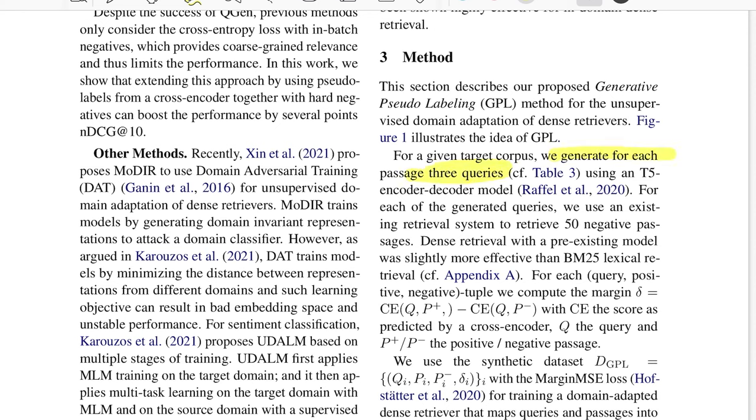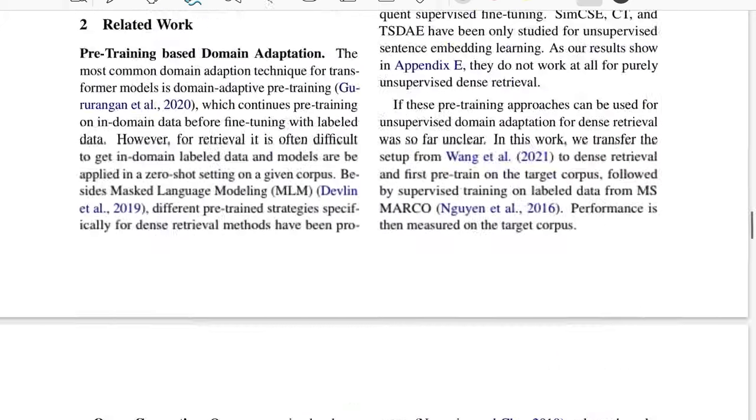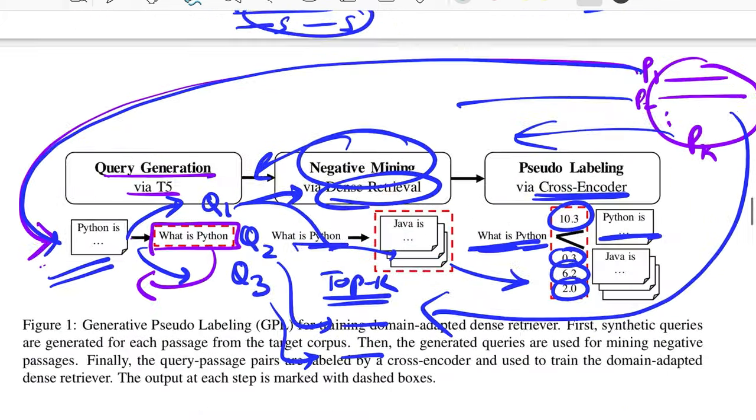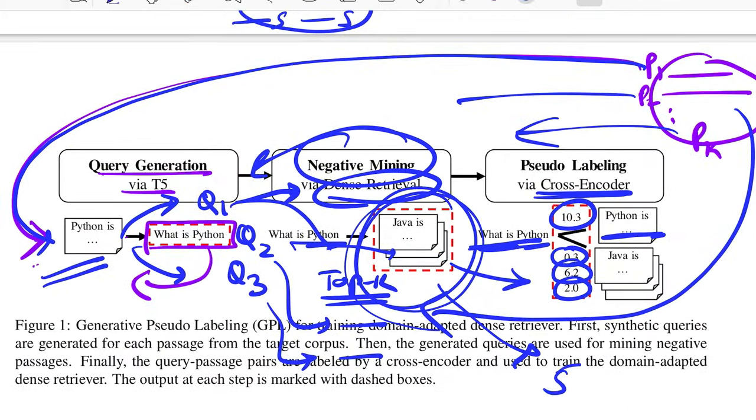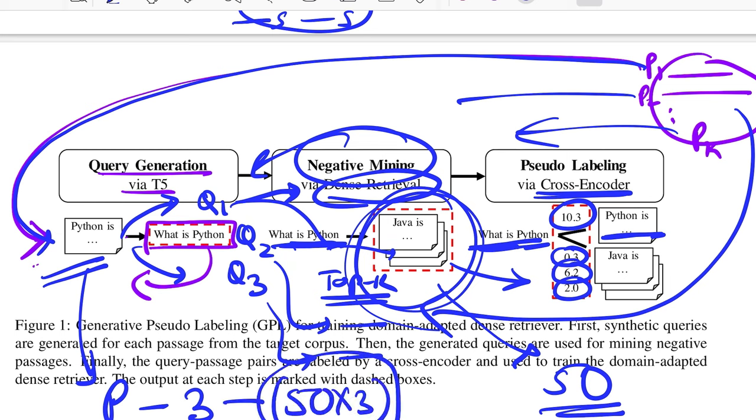So talking about a little more specifics, for every passage they generate three queries. This is something that you should note, using the T5 model. And for each of these generated queries, they retrieve 50 negative passages. So the step that you saw as part of negative mining, this count is nothing but 50 per query. Which means for the original passage, since you had three queries, for every you were having 50. So 50 into 3, total 150 passages what you retrieve from the original passage.